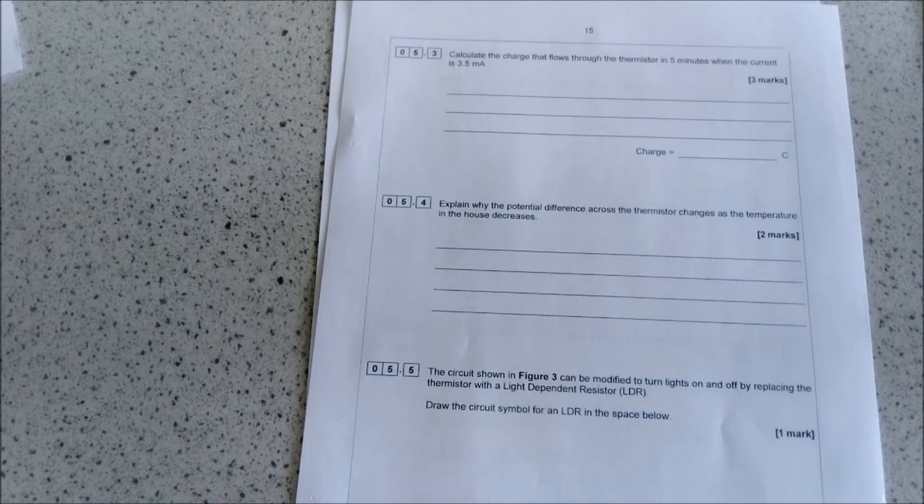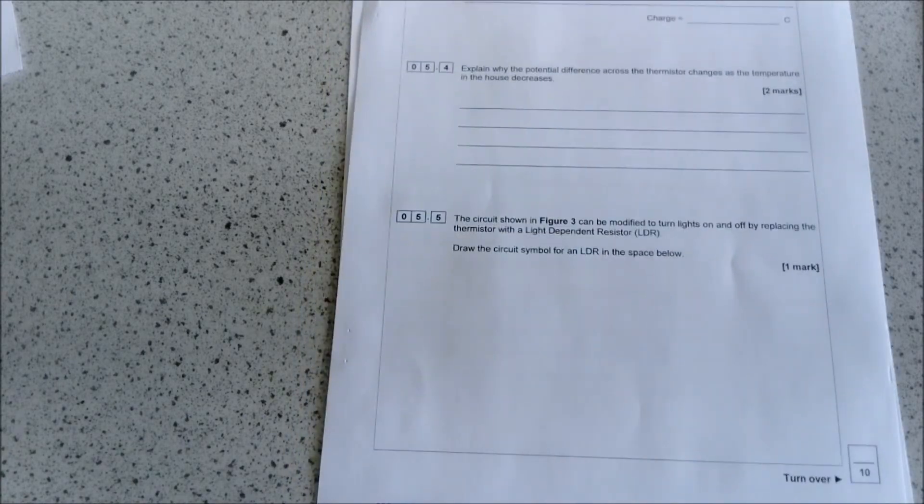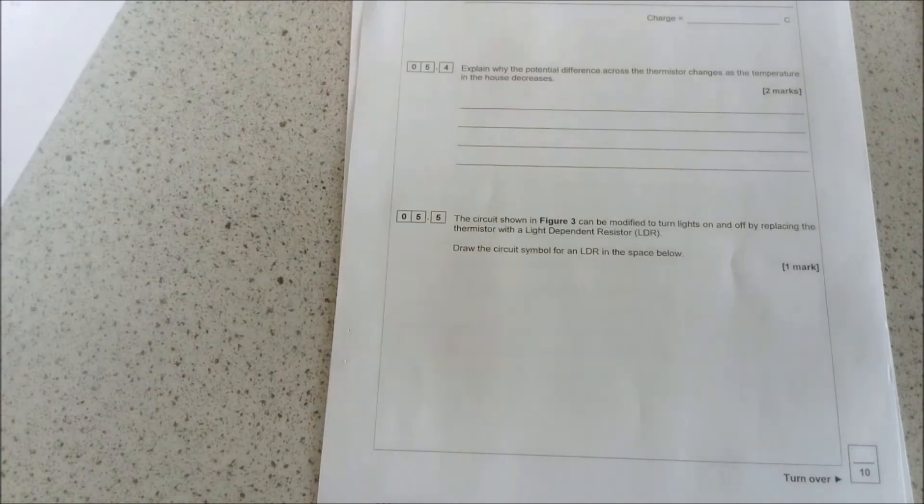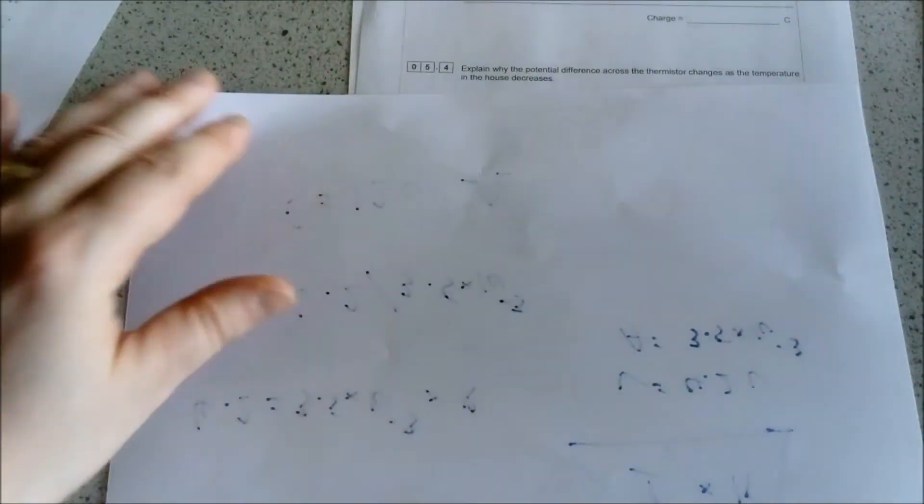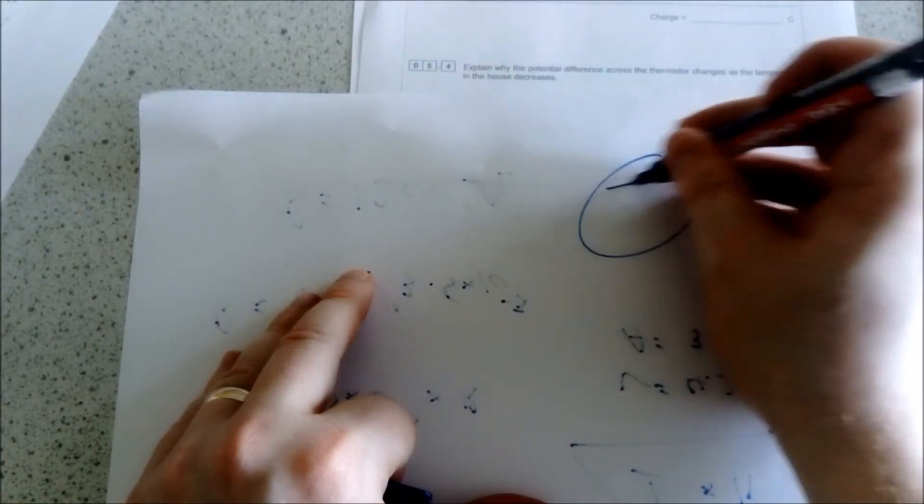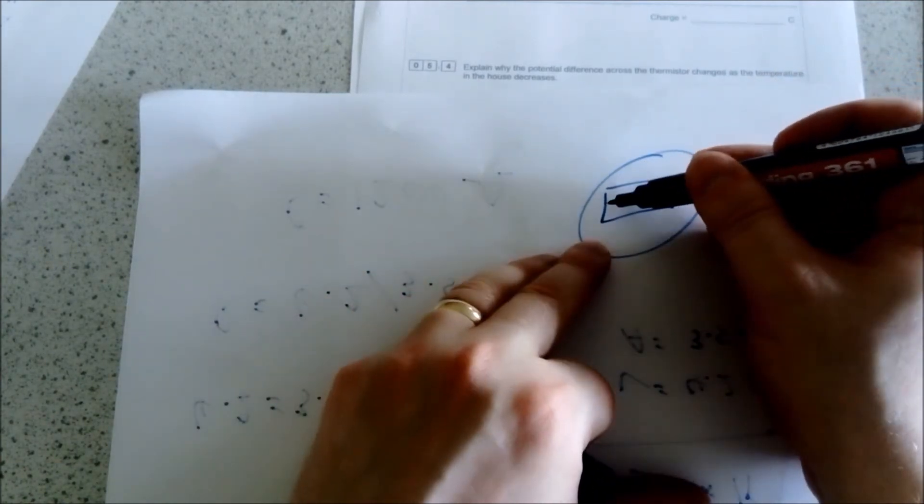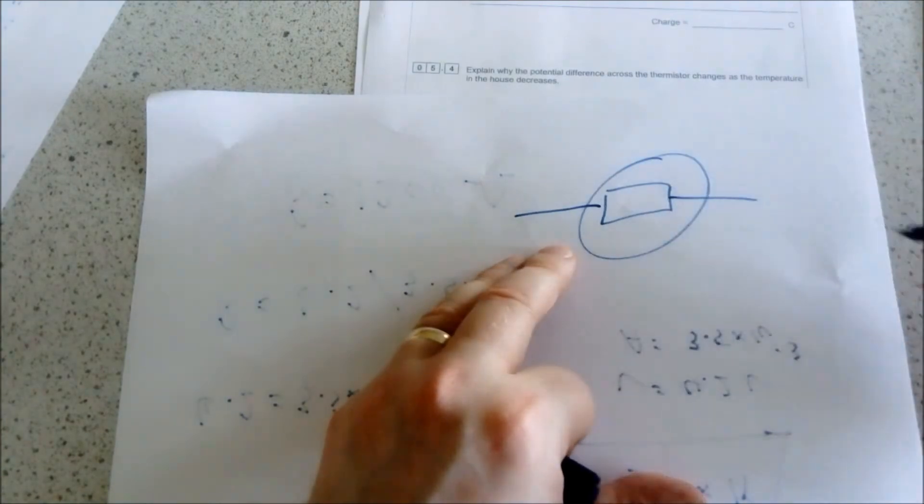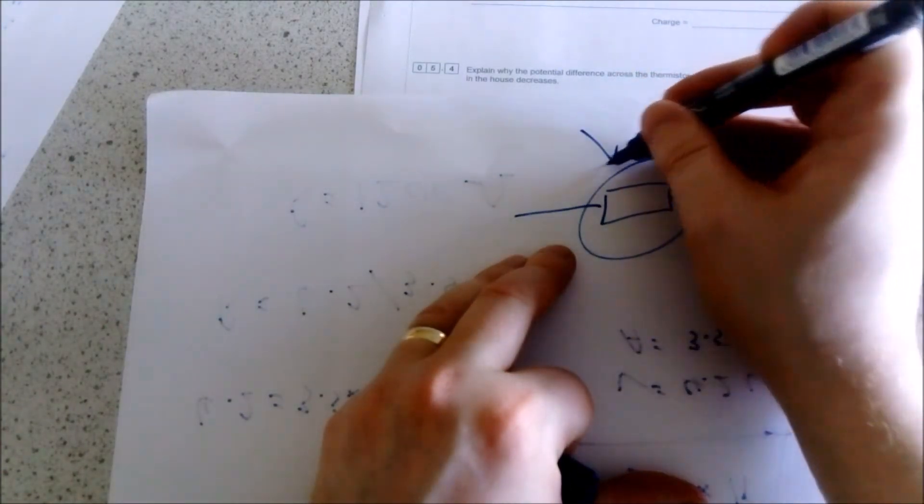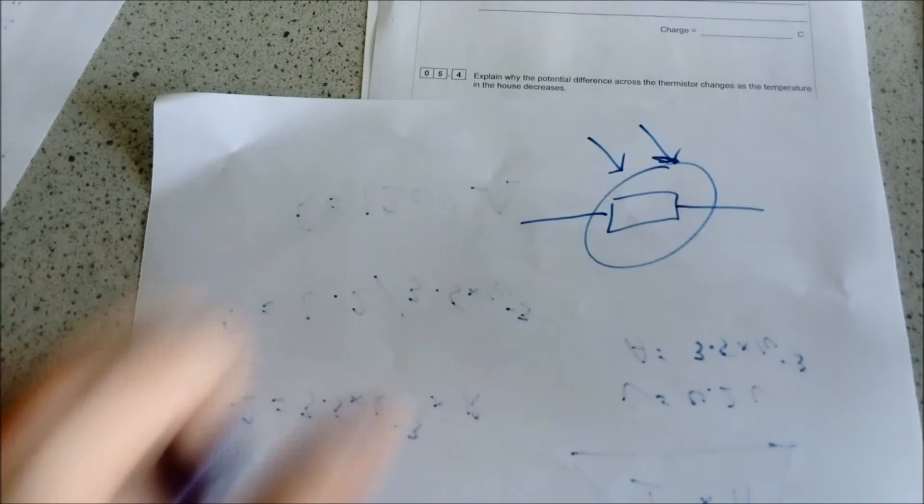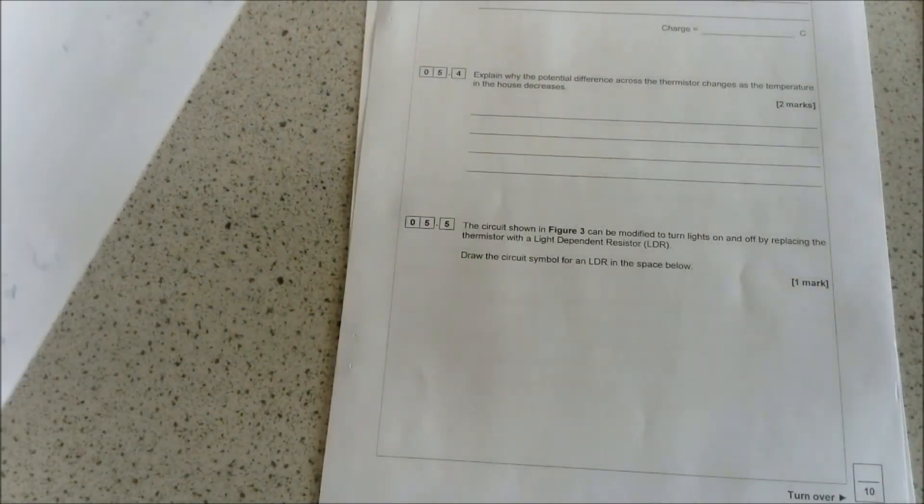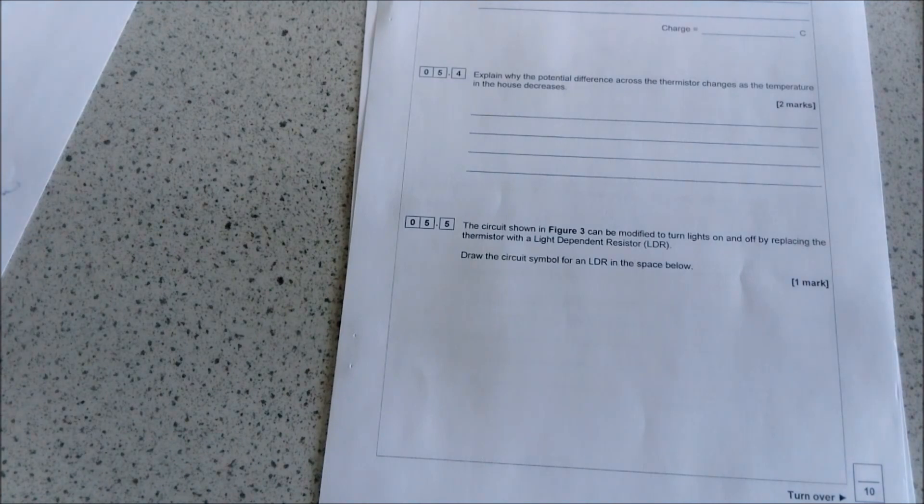You've got to talk about the physical resistance in the thermistor. And the final part is drawing the symbol for a light dependent resistor. All you need to remember is that any resistor is going to be a square box like that, and if it's light dependent, easy way to remember it: just draw some light rays coming into it. Go back, have a go at this question, really focus on squeezing out as many marks as possible.